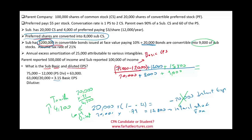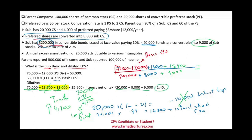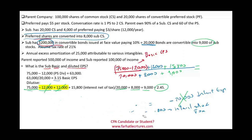Now we compute the full diluted EPS for the sub: ($75,000 − $12,000 + $12,000 + $15,800) ÷ (20,000 + 8,000 + 9,000) = $90,800 ÷ 37,000 = $2.45. The preferred and bonds cancel and add respectively. The dilutive net income used in this computation is $75,000 + $15,800 = $90,800. The sub indeed has dilutive securities.